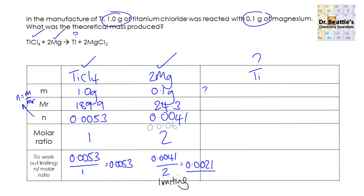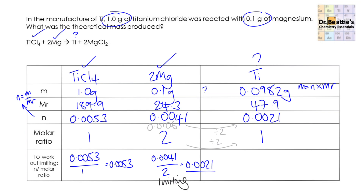Since magnesium is the limiting reactant and the molar ratio between magnesium and titanium is 2 to 1, we divide the moles of magnesium by 2: 0.0041 ÷ 2 = 0.0021 moles of titanium. The molecular mass of titanium is 47.9, so mass = 0.0021 × 47.9 = 0.0982 grams.